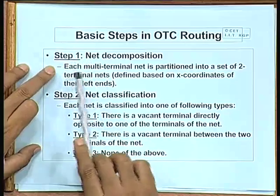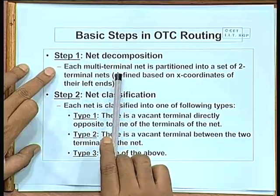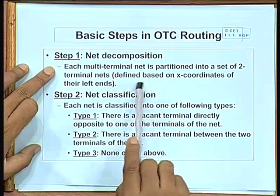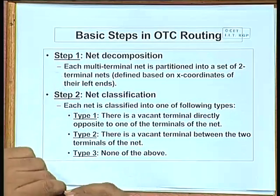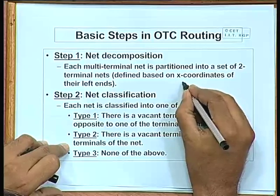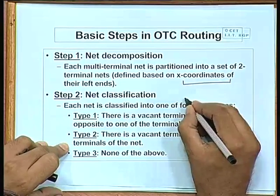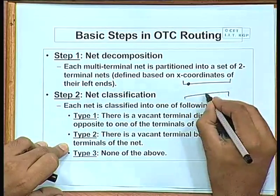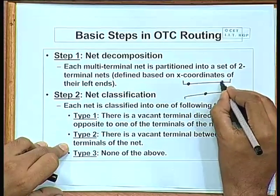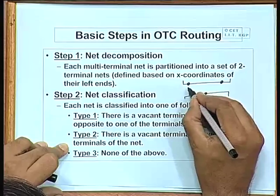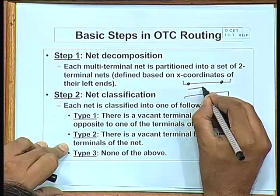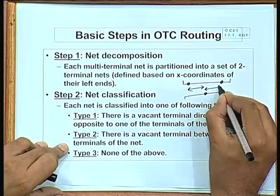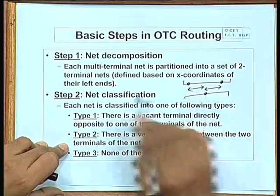The first step is that if you have multi-terminal nets you break them up into two-terminal nets. This breaking up is done with respect to the x-coordinate of the left ends. Suppose you have a net where one terminal is here, one here, and one here — this will break up into one net spanning from the first to second, and another from the second to the third terminal, based on the x-coordinate.